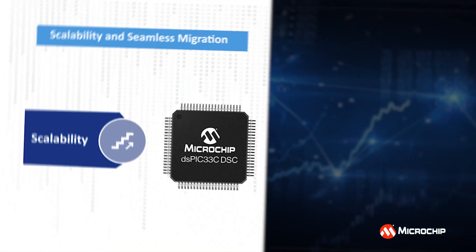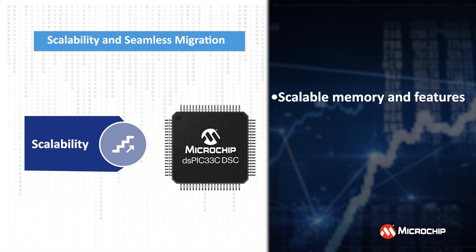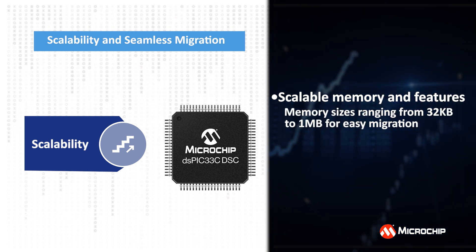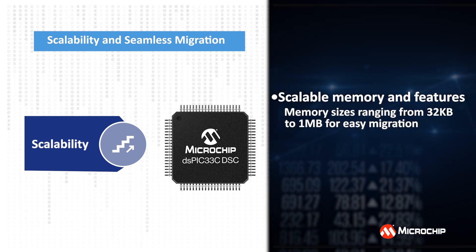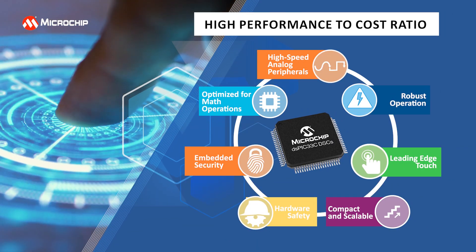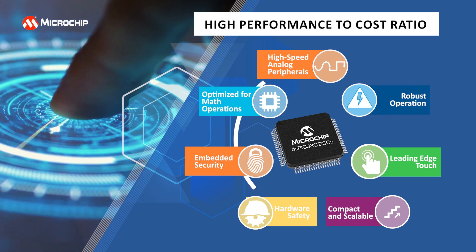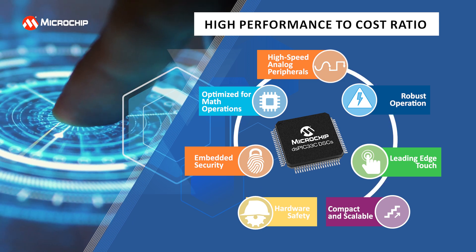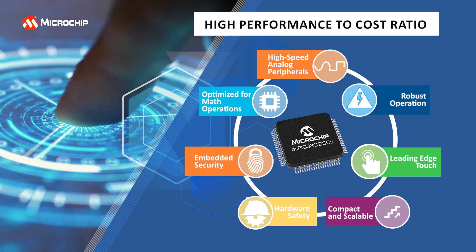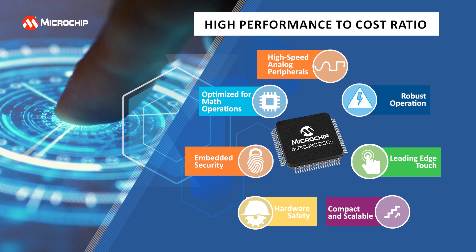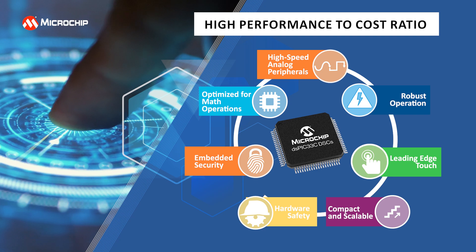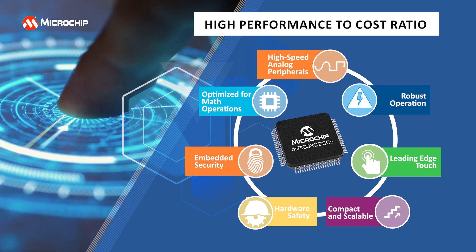If you need to scale up or optimize your design, this family of DSCs offers common peripherals and memory sizes ranging from 32 kilobytes to 1 megabyte for easy migration. These digital signal controllers with high performance core bring a high level of integration by running multiple functions along with touch sensing. A compact package and scalable memory enable cost-effective implementation of functions such as touch, functional safety, security, canned communication, and other housekeeping functions using a single DSPIC 33C DSC, bringing higher performance to cost benefits.